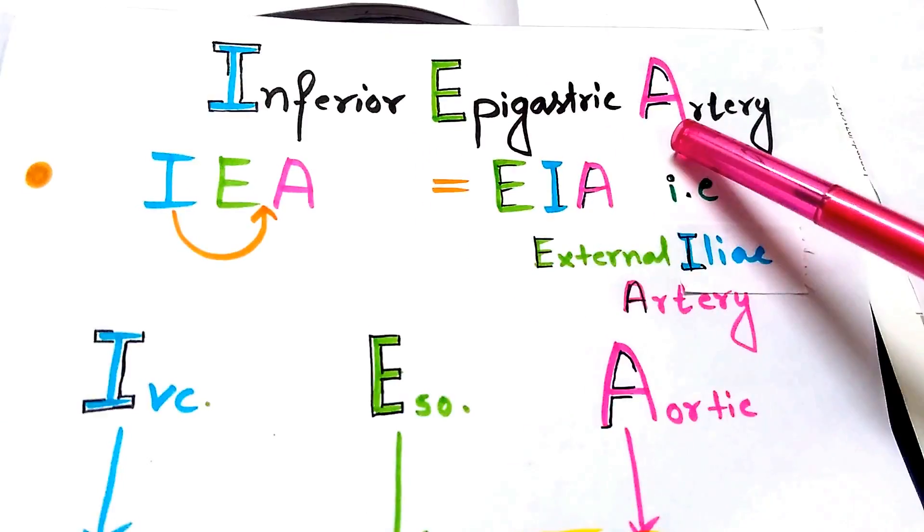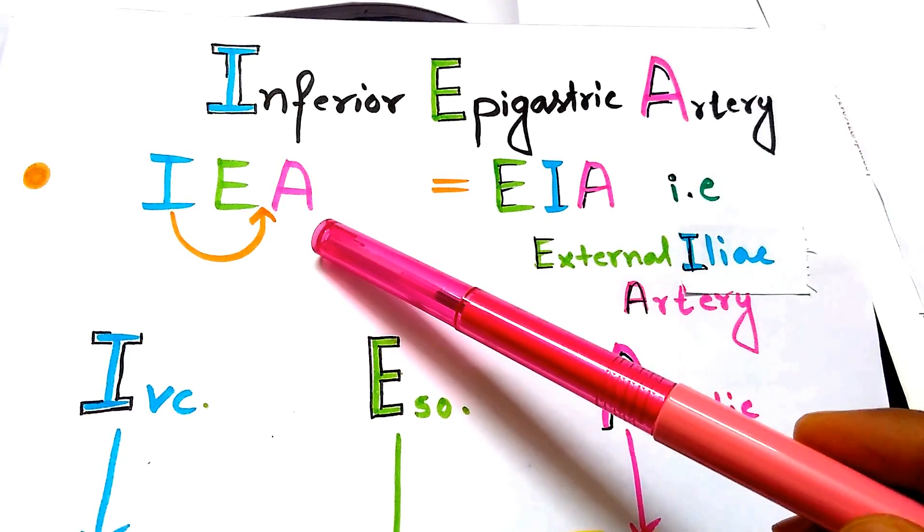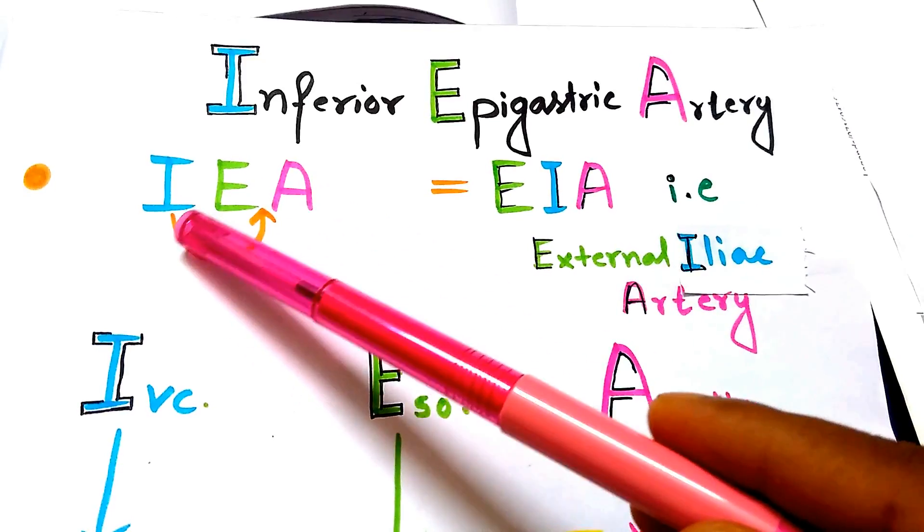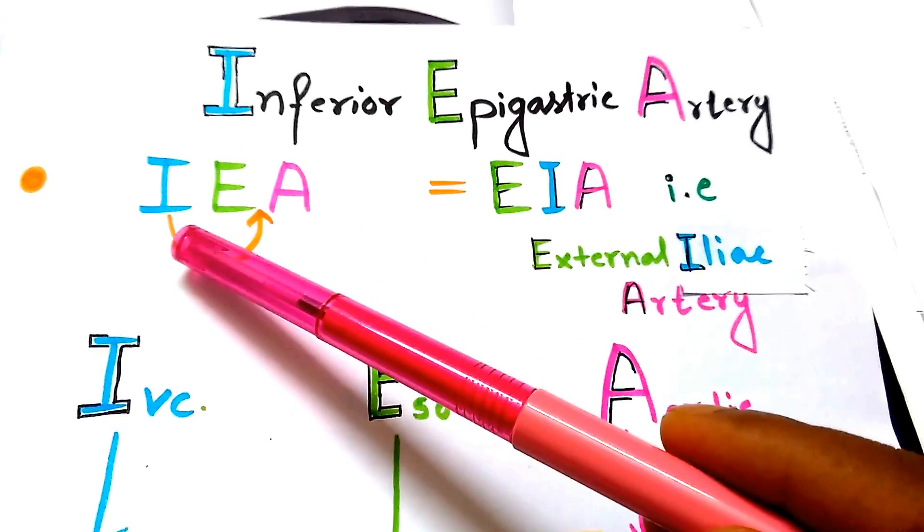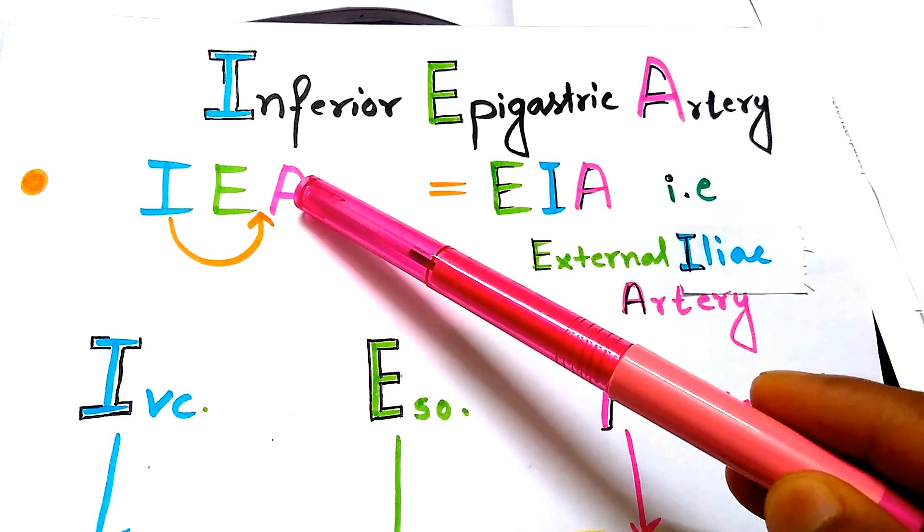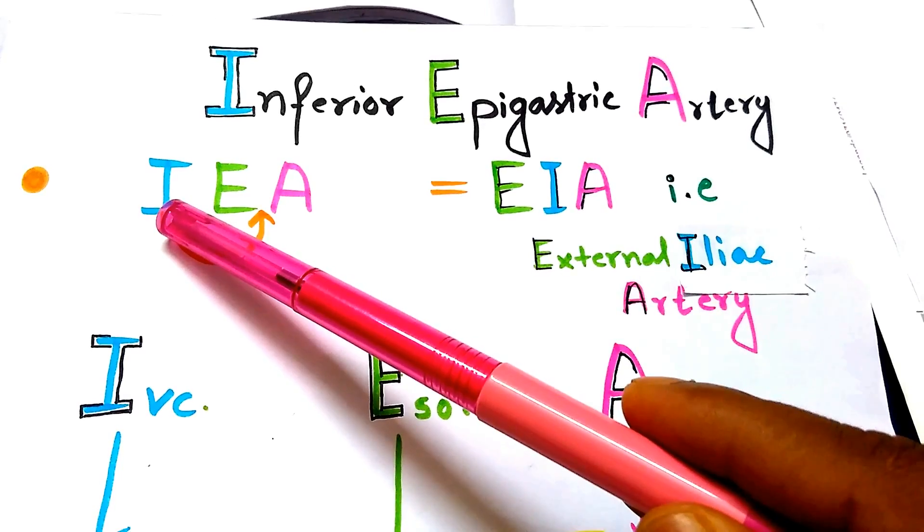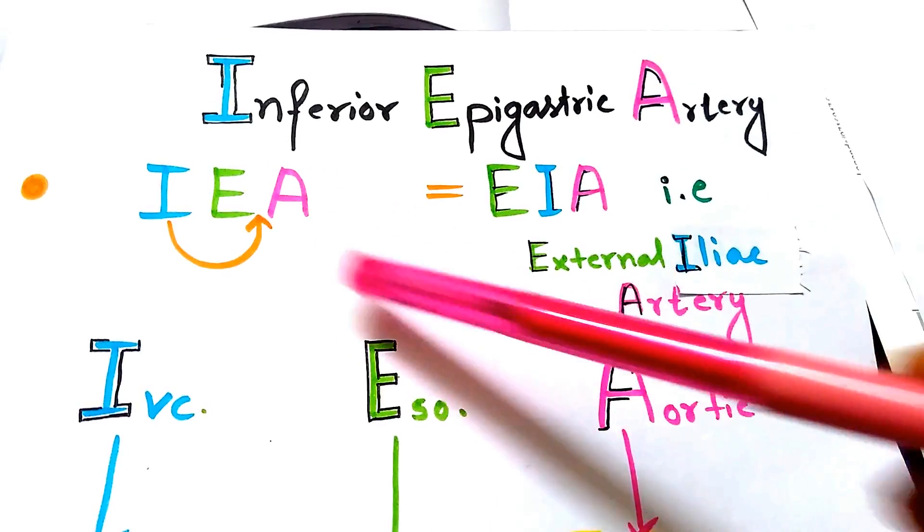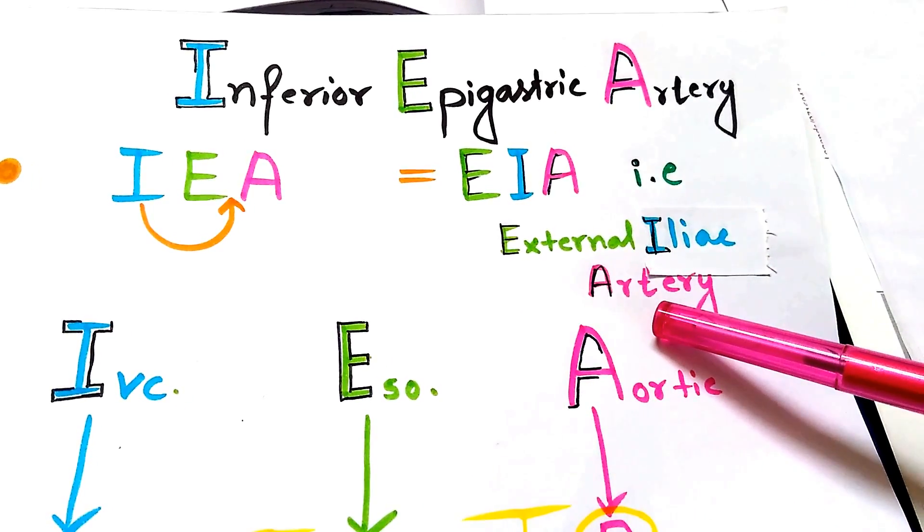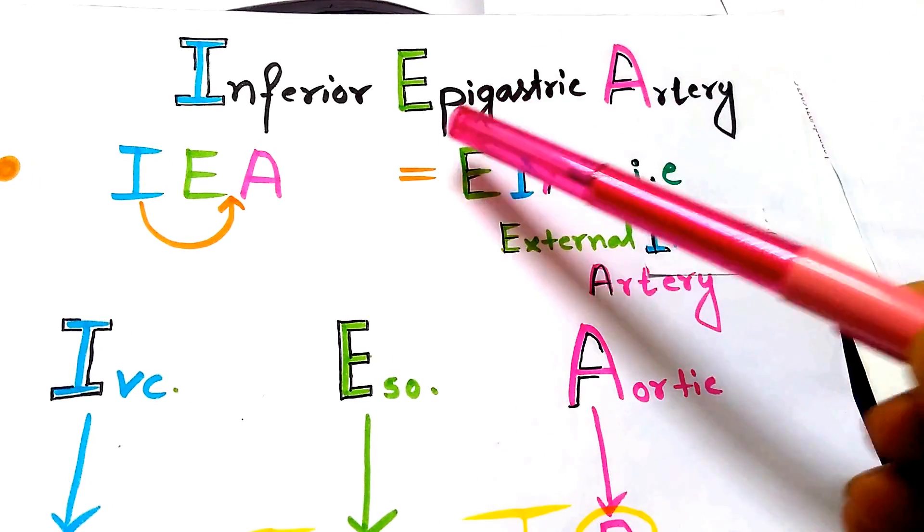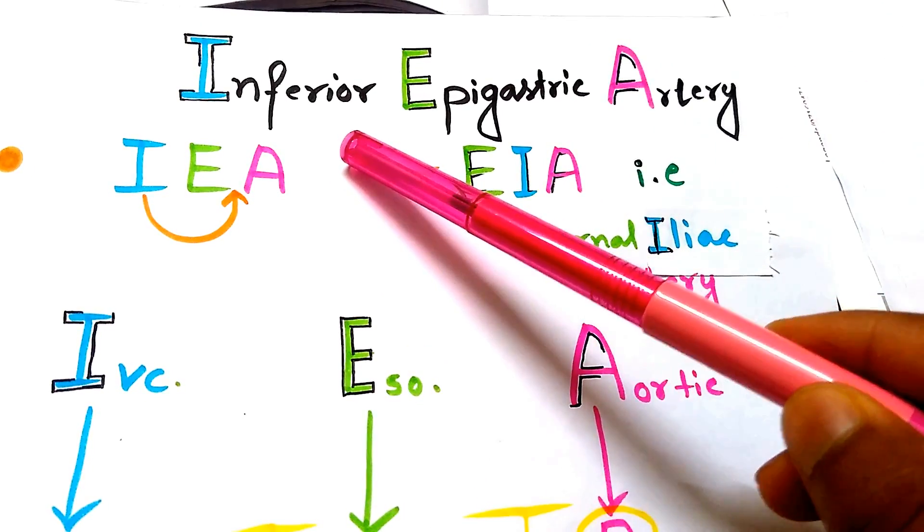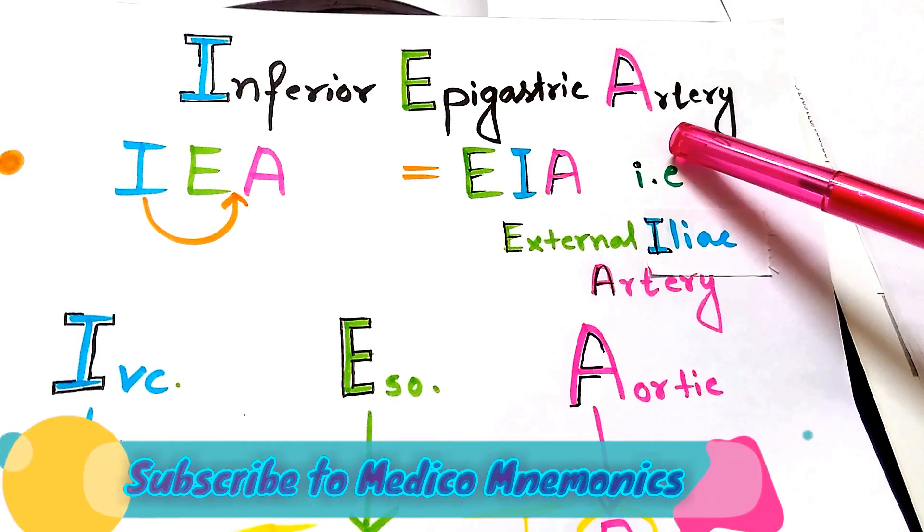The answer is it is a unique artery. If I change the position of I in between E and A, by shifting the position of I in between E and A you can find EIA, that is External Iliac Artery, which is the origin of inferior epigastric artery. This is the uniqueness of this inferior epigastric artery.